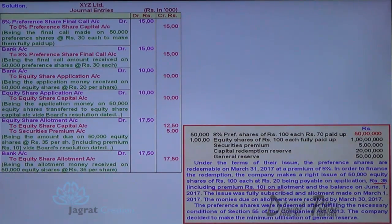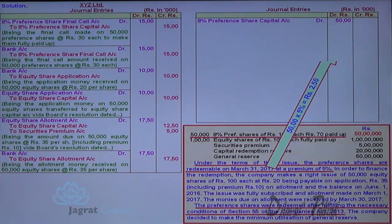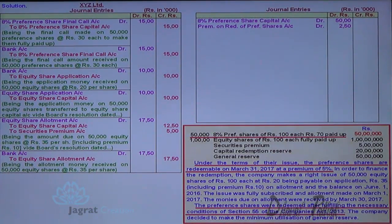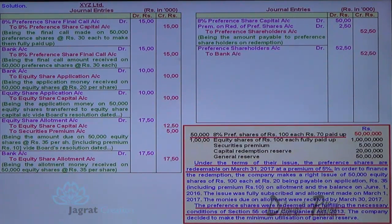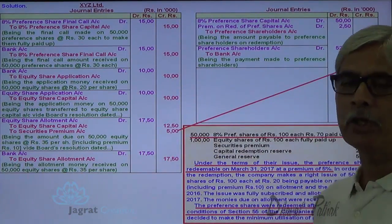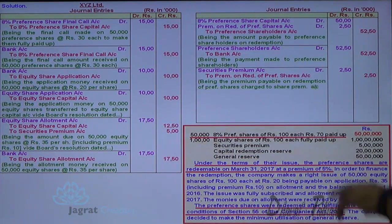The 50,000 preference shares are now to be redeemed. Preference share capital account debit — 50 lakhs. The preference shares are redeemed at a premium of 5%, so preference redemption premium: 50 lakhs into 5% = 2.5 lakhs. Preference share capital account and preference redemption premium account debit, to preference shareholders account credit — being the amount payable to preference holders with premium. Preference shareholders account debit to bank account credit. Redemption premium is provided out of security premium: security premium account debit to preference redemption premium account credit — being the redemption premium adjusted against security premium.